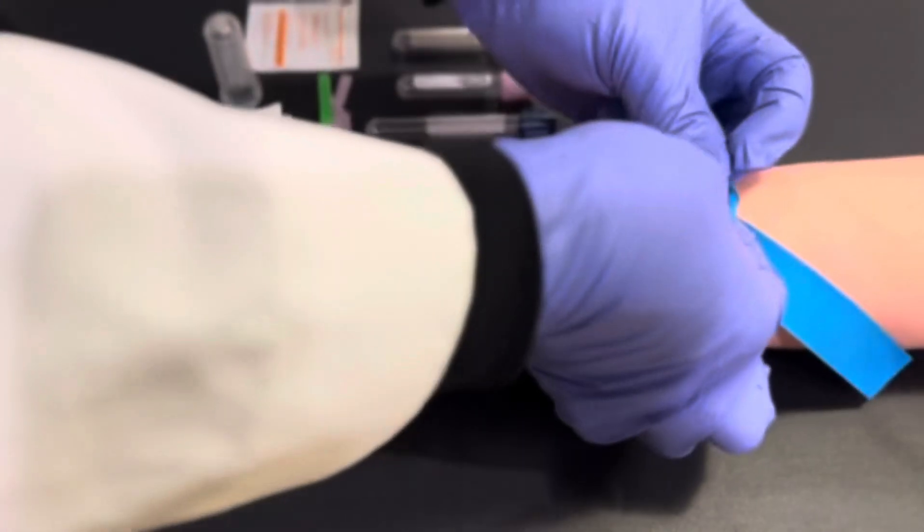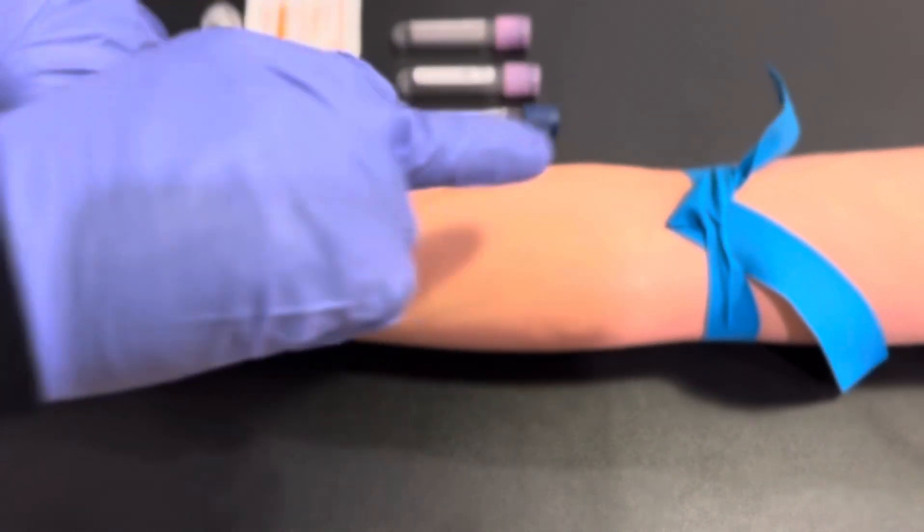First, you're going to apply your tourniquet at the antecubital fossa, focusing on the three primary veins.